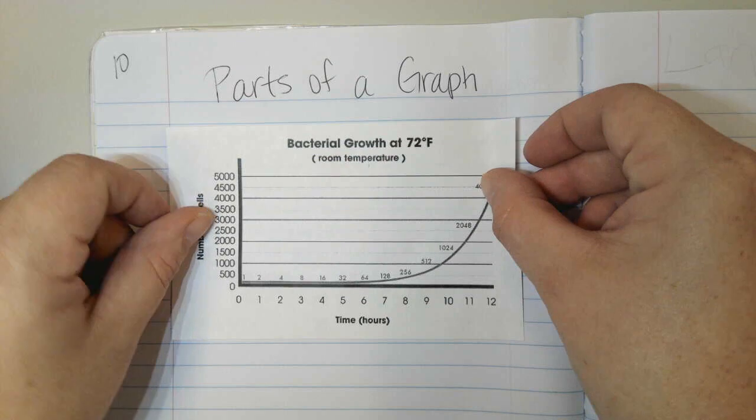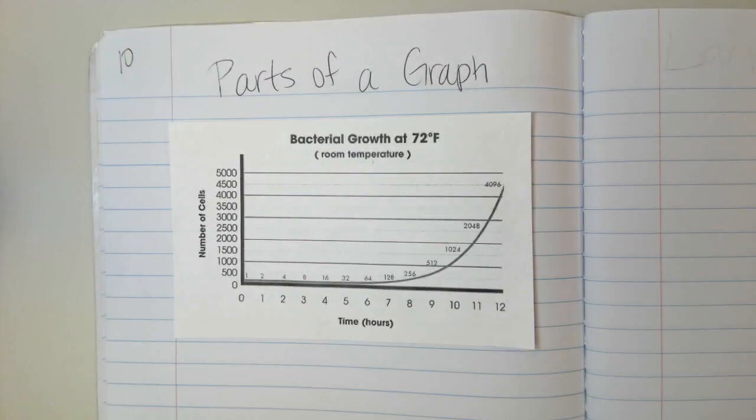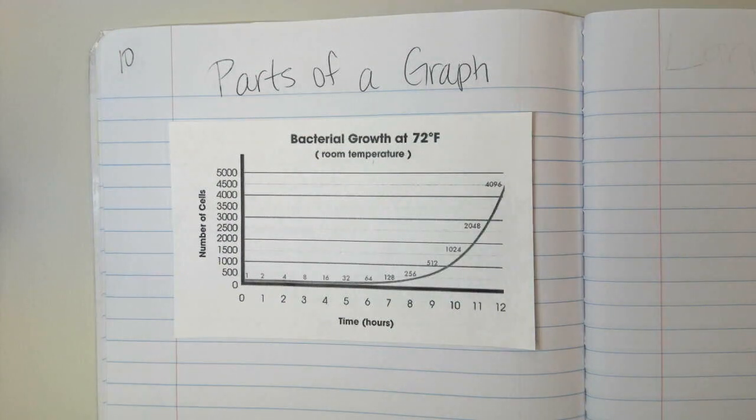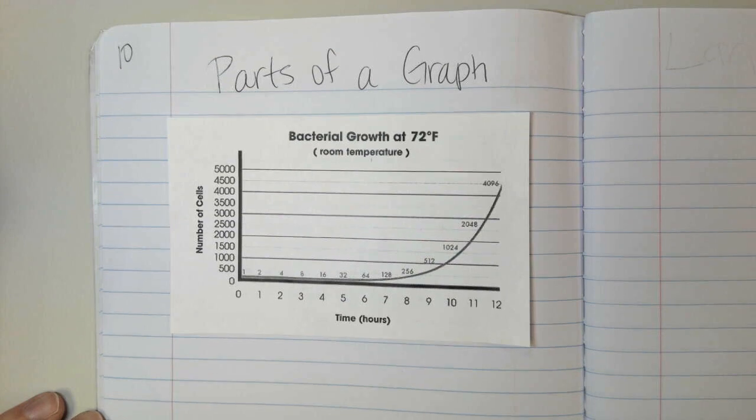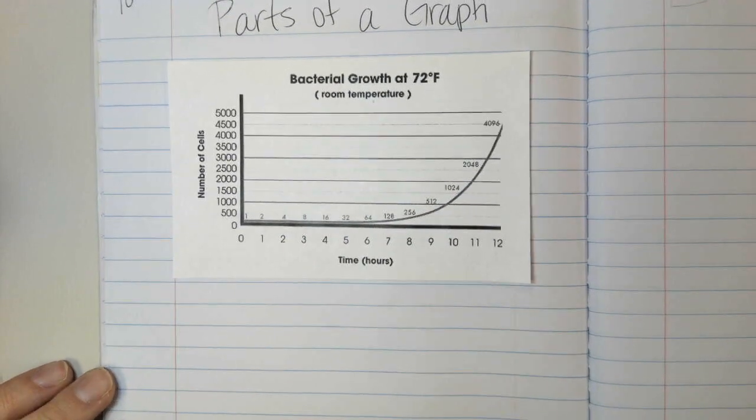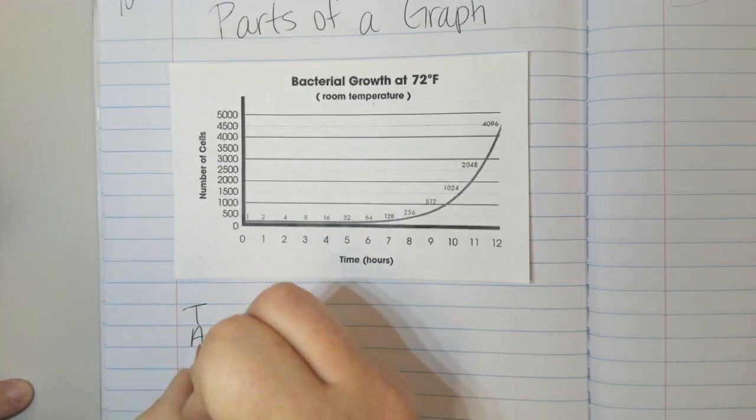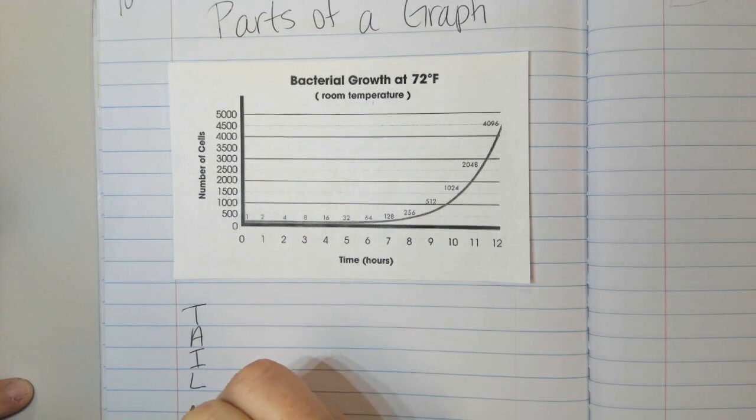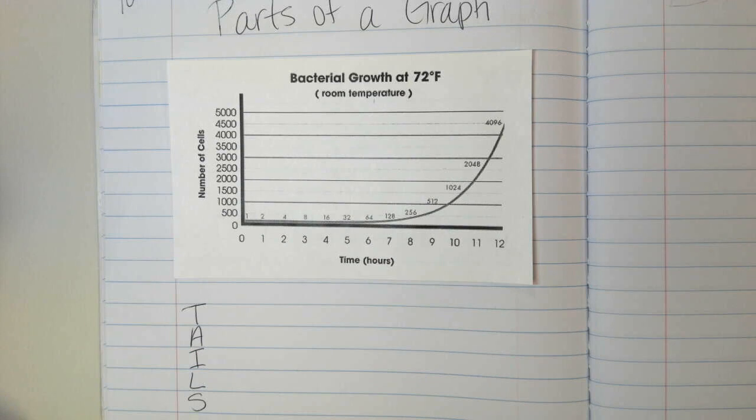Maybe leave like one line at the top. To remember the parts of a graph, there's an acronym that we can use. An acronym is like initials or a word that help us remember different parts of something. So the acronym that we're going to use is called TAILS: T-A-I-L-S. I'm going to write that right down here. So each letter stands for something that we need to have on our graph.